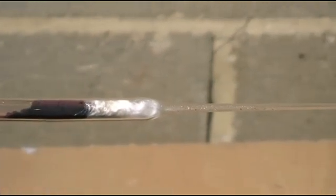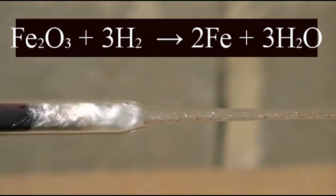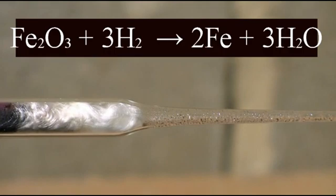If we look towards the end of our reduction tube, we can see some water has condensed, and this is one of the products of the hydrogen reduction of iron oxide.